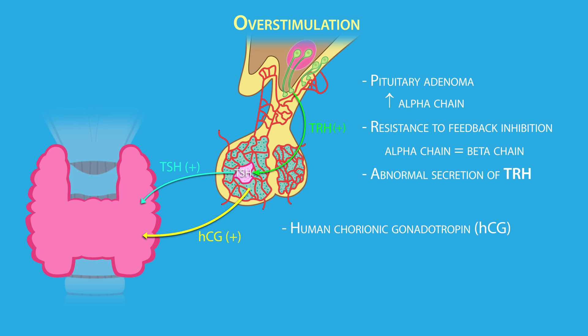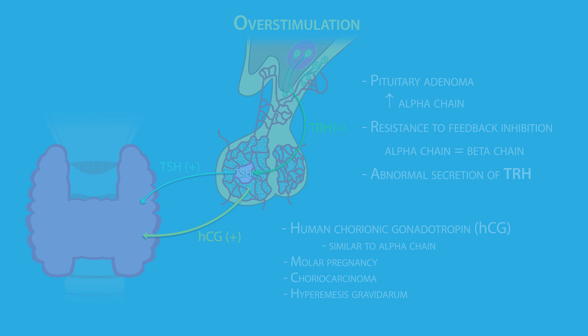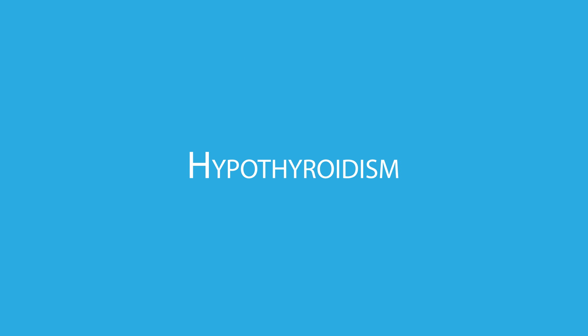High levels of human chorionic gonadotropin (HCG) can also lead to overstimulation of the thyroid gland, because HCG is a weak stimulator of the TSH receptor due to its similarity with the TSH alpha subunit. Abnormally high HCG levels are seen in molar pregnancy, choriocarcinoma, and hyperemesis gravidarum — characterized by persistent severe vomiting leading to weight loss and dehydration, typically during pregnancy. The next lesson will cover the mechanisms involved in hypothyroidism.